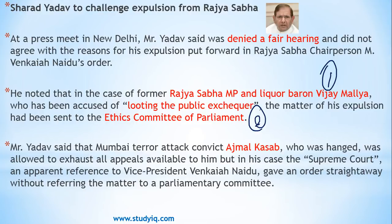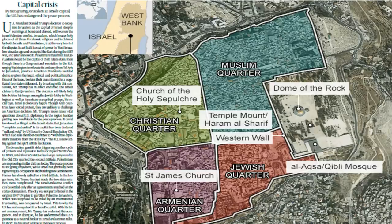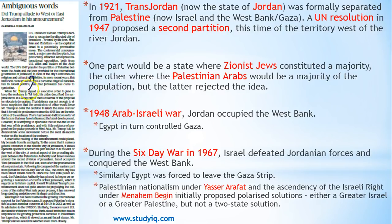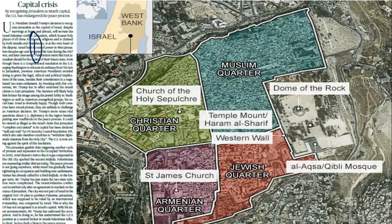Moving on, the second item is about Israel, Palestine, and the USA. The USA has formally recognized Jerusalem as the official capital of Israel. This is going to create problems, and in fact already has. We have two articles on this — one editorial and one news article from today's Hindu — and I have clubbed them together along with items from the international page for a better understanding.